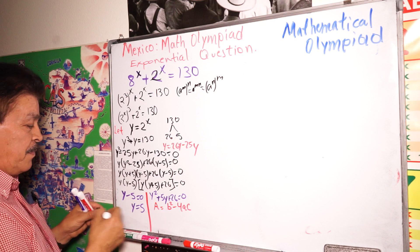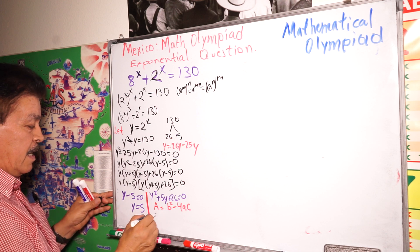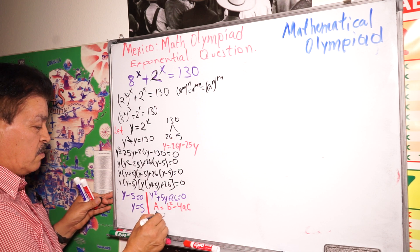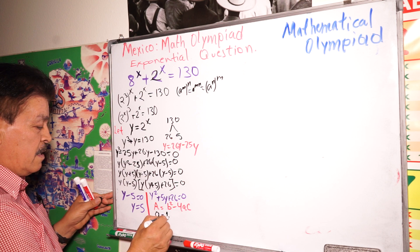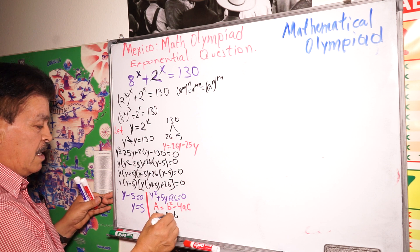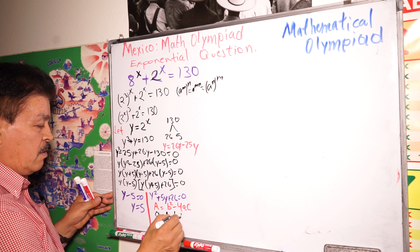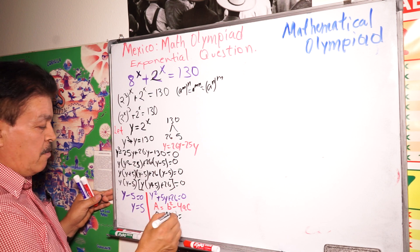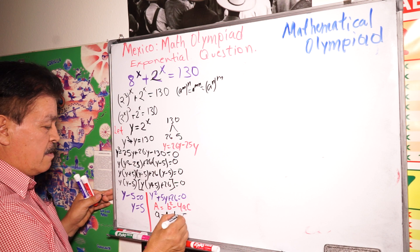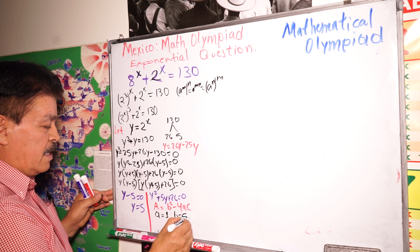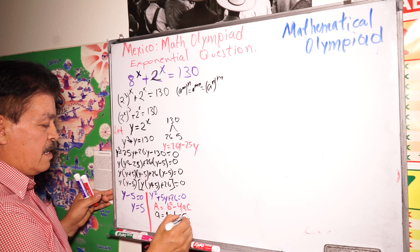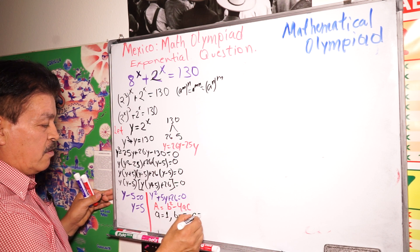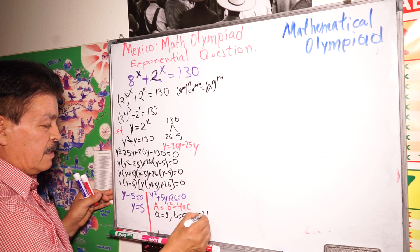For the quadratic Y squared plus 5Y plus 26 equals 0, remember the discriminant formula: B squared minus 4AC. Here A equals 1, B equals 5, and C equals 26.